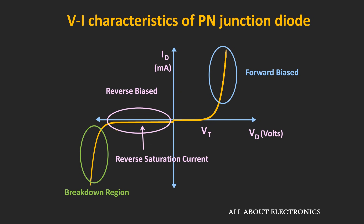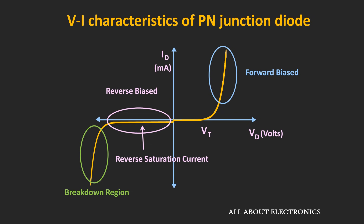But there is a maximum limit on the voltage which can be applied in this reverse bias condition. If we apply a voltage beyond this limit, then suddenly a lot of current starts flowing in this reverse direction. So this region of operation of the diode is known as the breakdown region of operation, and the effect due to which it occurs is known as the avalanche effect.